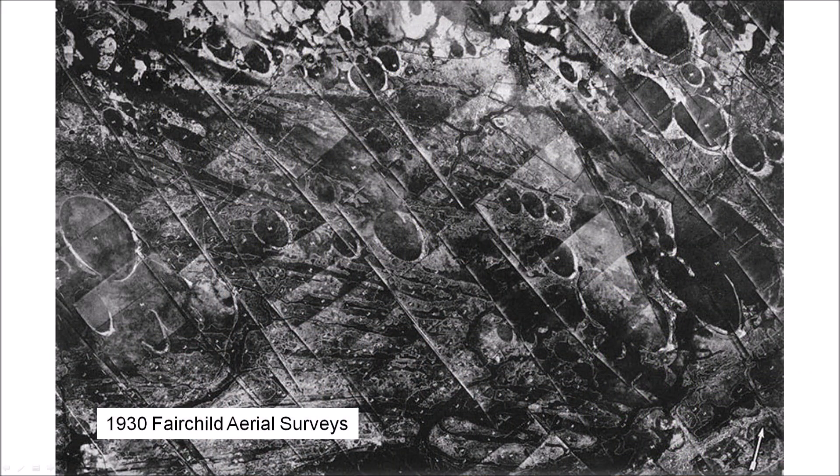The modern story of the Carolina Bays started when commercial aviation gave us a new perspective of the Earth's surface. In 1930, some peculiar elliptical depressions near Conway, South Carolina were photographed by the Fairchild Aerial Surveys and they were brought to the attention of Professors Melton and Shriver from the University of Oklahoma.